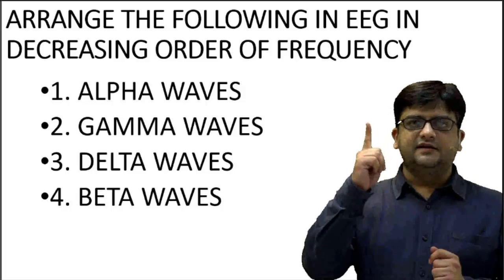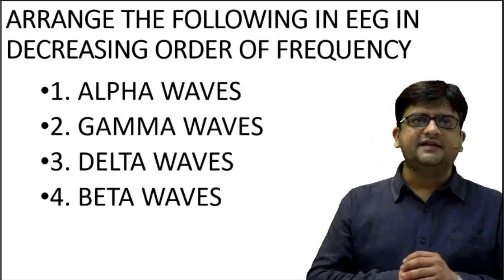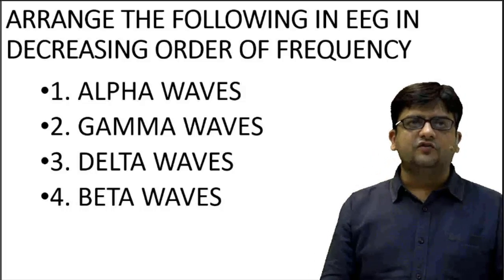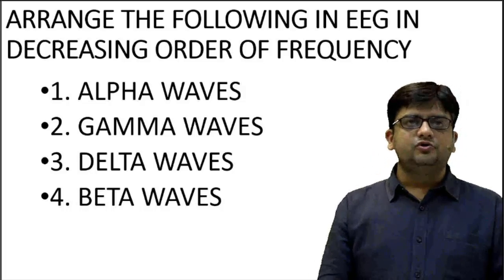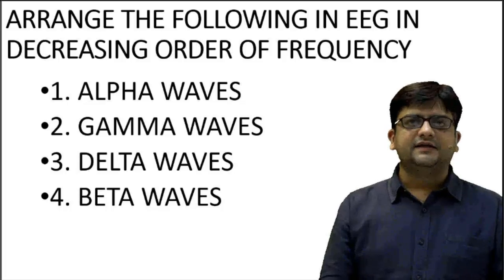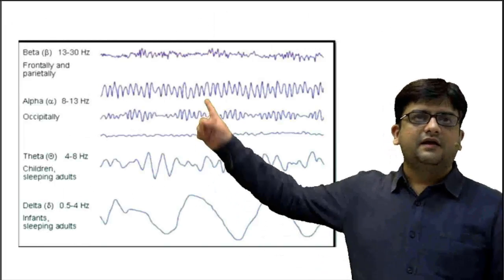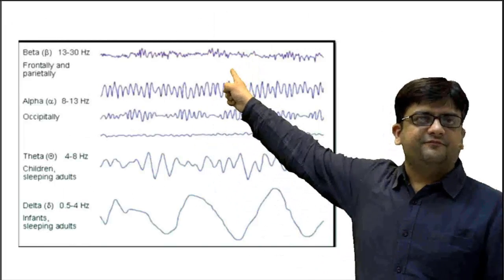And next will be 3 delta. So the sequence of this question should be 2, 4, 1, 3. I repeat: 2, 4, 1, 3.